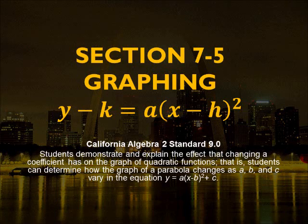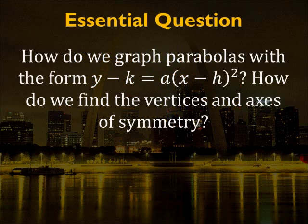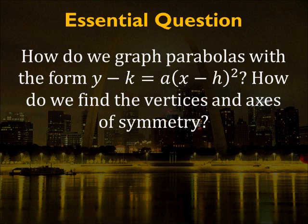This is section 7.5, graphing y minus k equals a times x minus h squared. We are going to graph parabolas with this form, and we're going to learn how to find the vertices and axes of symmetry. Vertices is plural for vertex, axes is plural for axis. Today's video is going to be a little different. All I'm going to go over is the vocabulary on your handout. We are going to do the rest of the examples in class tomorrow after the short quiz on 7.1 to 7.4. So all you have to do is fill in the vocabulary, watch this video, and you are going to work in groups on Wednesday to do some of the examples.